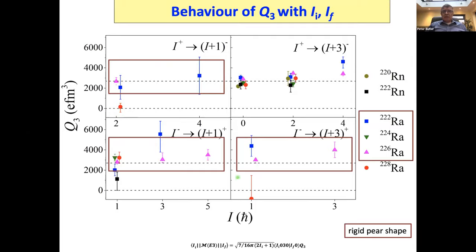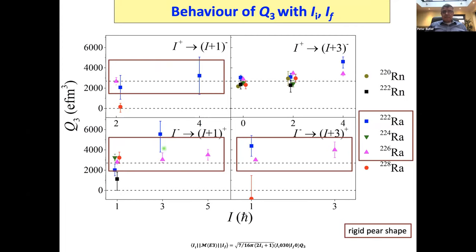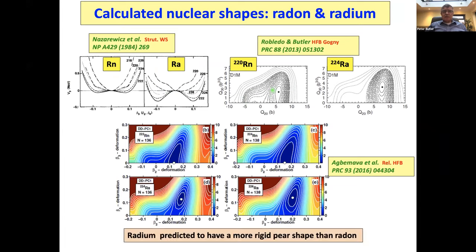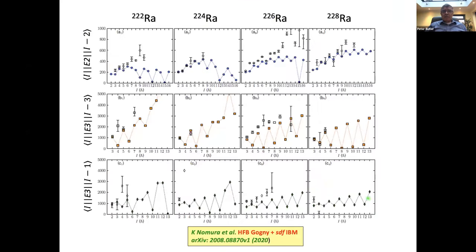Various theoretical calculations — Strutinsky, Skyrme–HFB, and relativistic mean field — all predict that radium has a more rigid pear shape than radon. There are also recent arXiv calculations suggesting oscillations in some of these intrinsic E3 moments, the origin of which we don't fully understand as yet.